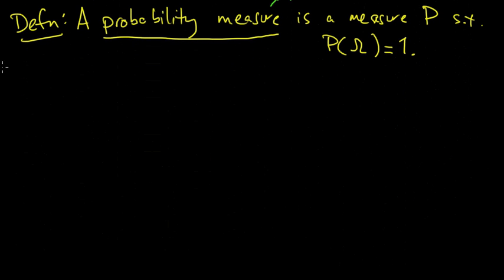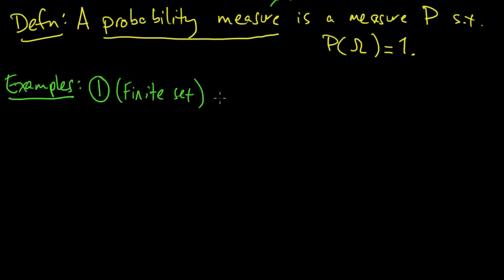So let's look at some examples. Look at some examples of measures, and in particular, we're going to start looking at examples of probability measures. So the first example, we'll take a finite set omega. So we'll take omega to be just the numbers from 1 to n, say, just some finite set.